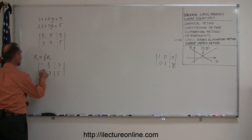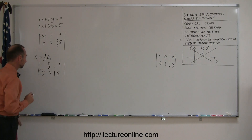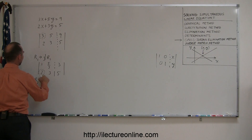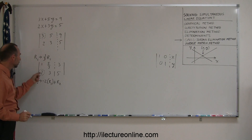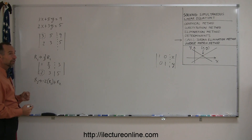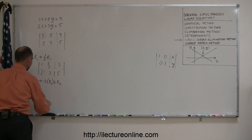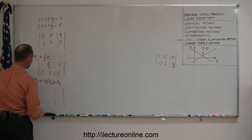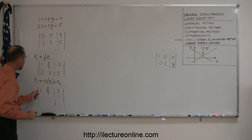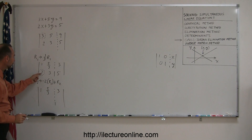The second thing we want to do is take this number and turn it into a 0. The methodology says that we take the second row and replace it by the negative of this number times the row with the 1 in it, adding it to the row that we're trying to change. So we're going to multiply this by negative 2, which gives us negative 2, and add it to the 2 to turn it into a 0. Multiplying this 1 by negative 2 gives us negative 2, added to 2 gives me 0.